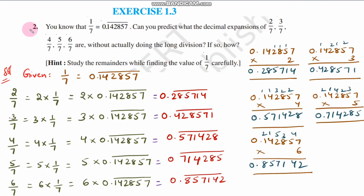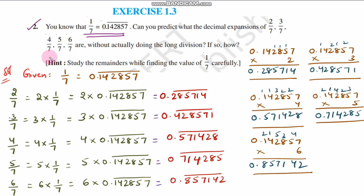Now, question number 2: You know that 1 by 7 is equal to 0.142857 bar. Can you predict what the decimal expansions of 2 by 7, 3 by 7, 4 by 7, 5 by 7, and 6 by 7 are — without actually doing the long division? If so, how? Here, we already know the value of 1 by 7, and we need to predict the values of these fractions without performing long division.